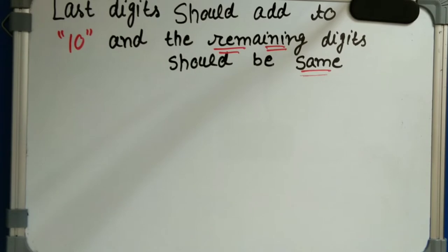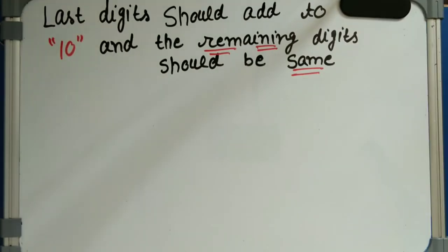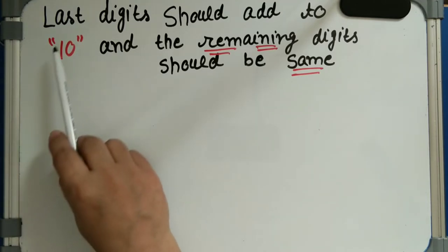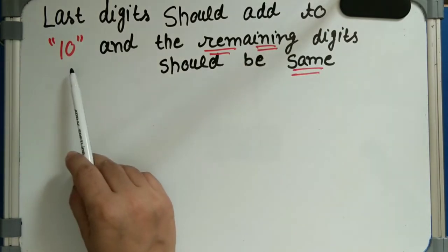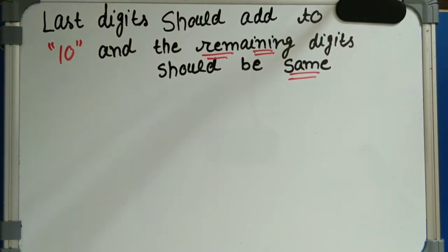It is the fastest and the trickiest method I have covered in all my lectures. This method has two conditions. The first condition is the last digits should add to 10. If we take any two numbers, their last digits must sum to 10, and the remaining digits should be the same.